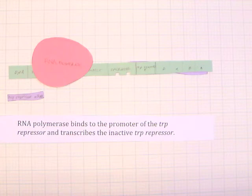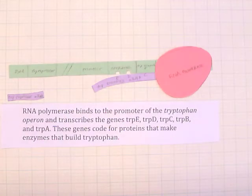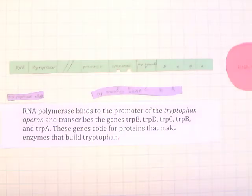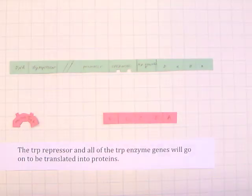Then RNA polymerase binds to the promoter of the tryptophan operon and transcribes the genes trpE, trpD, trpC, trpB, and trpA. These genes code for proteins that make enzymes that build tryptophan. The trp repressor and all of the trp enzyme genes will go on to be translated into proteins.